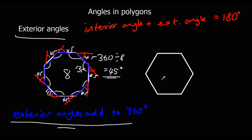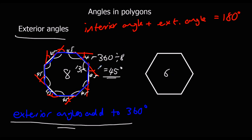Here we've got a hexagon — a six-sided shape. The exterior angles add up to 360, so 360 divided by 6 gives us 60 degrees. Each of these exterior angles is 60 degrees, and the interior angle is 180 minus 60, so 120 degrees.